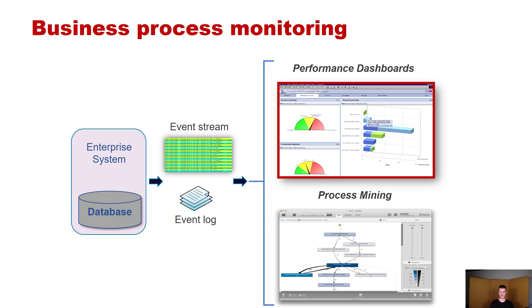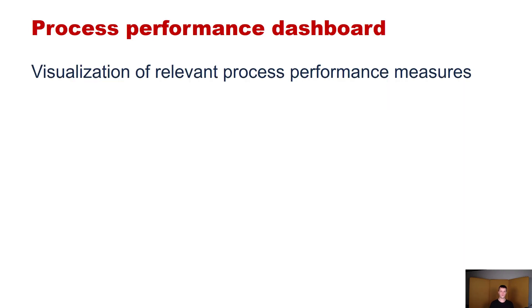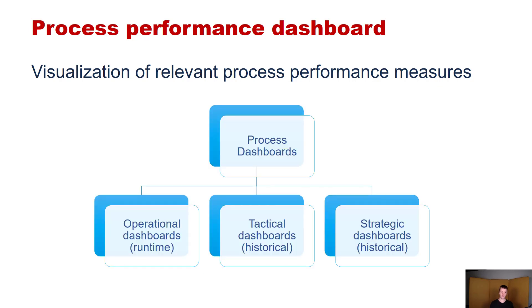The performance dashboard is meant to give an understanding of, or monitor how the process performance is currently ongoing. A process performance dashboard itself is actually a visualization of the relevant process performance measures, and there are three types of them: first, operational dashboards; second, tactical dashboards; and third, strategic dashboards.